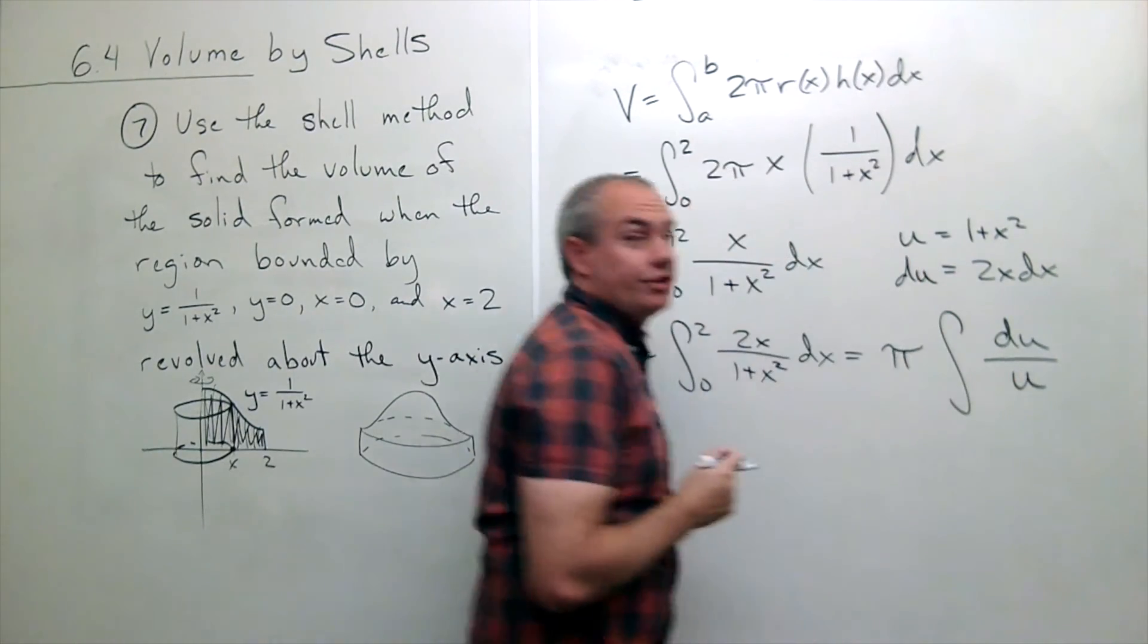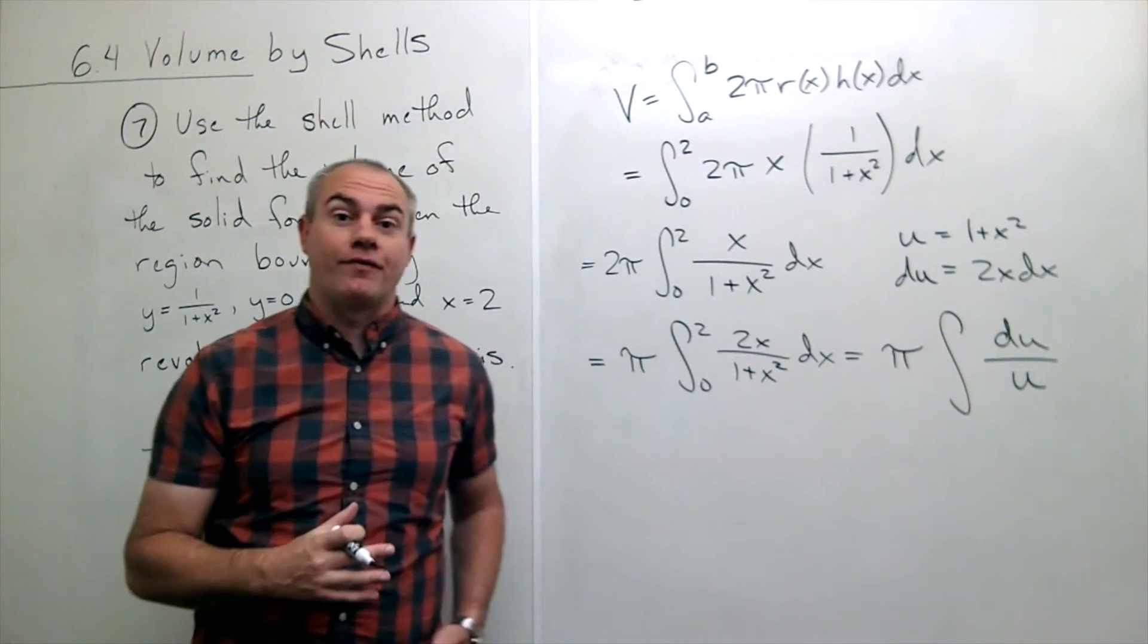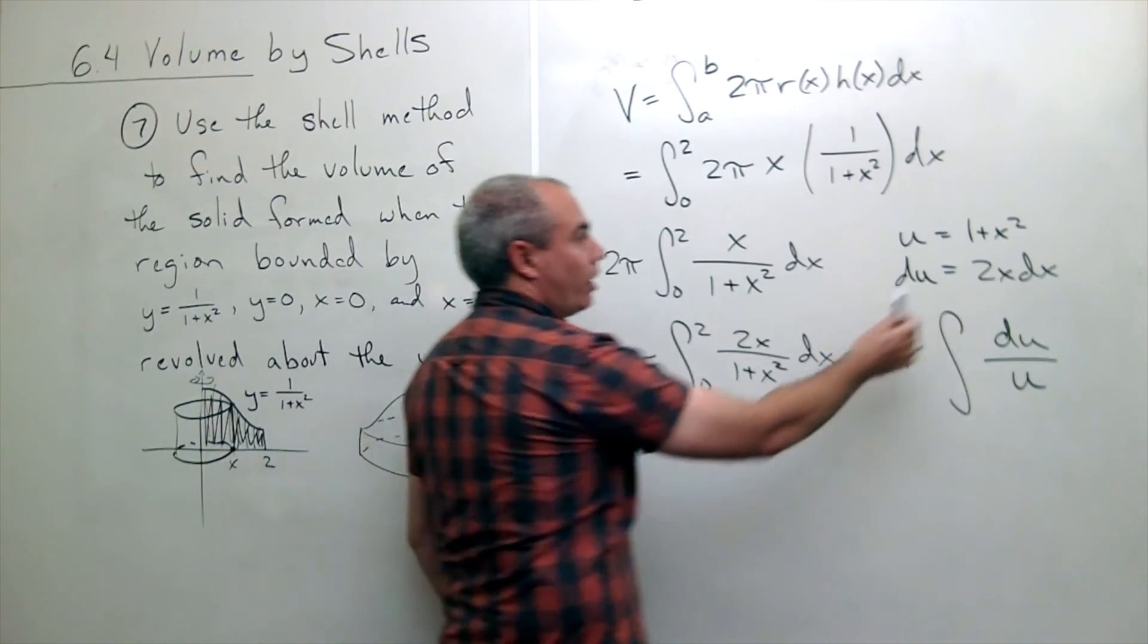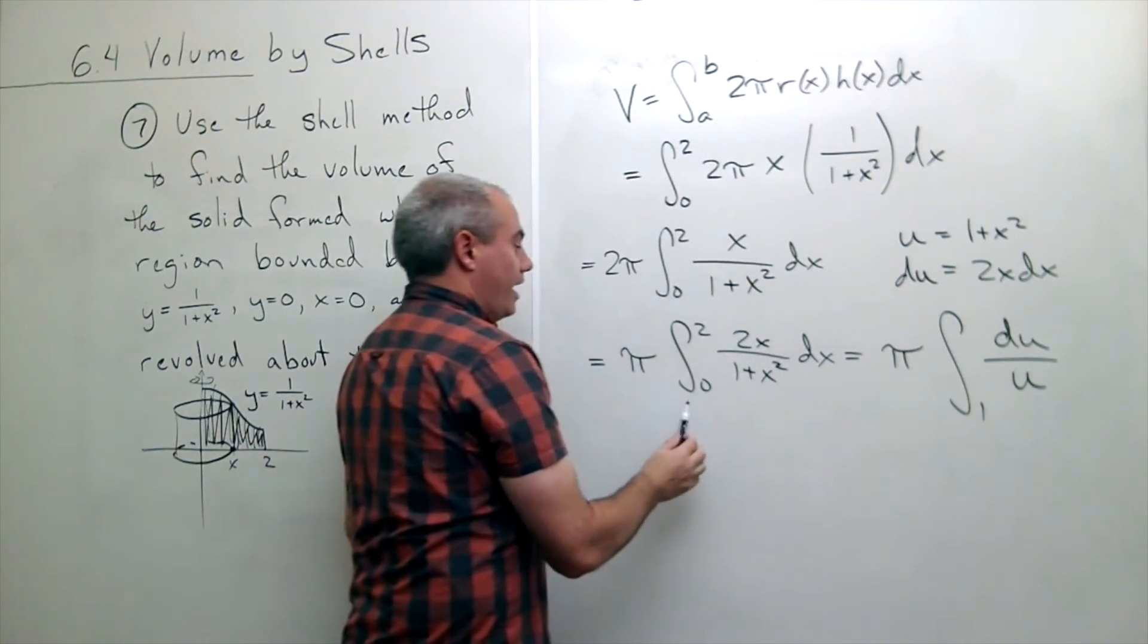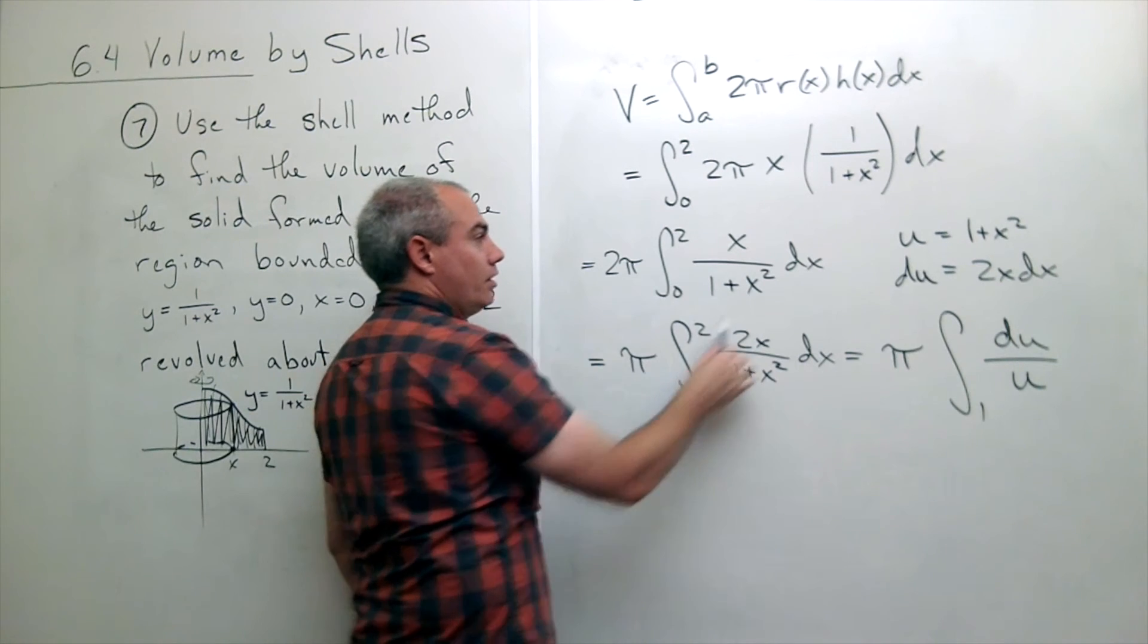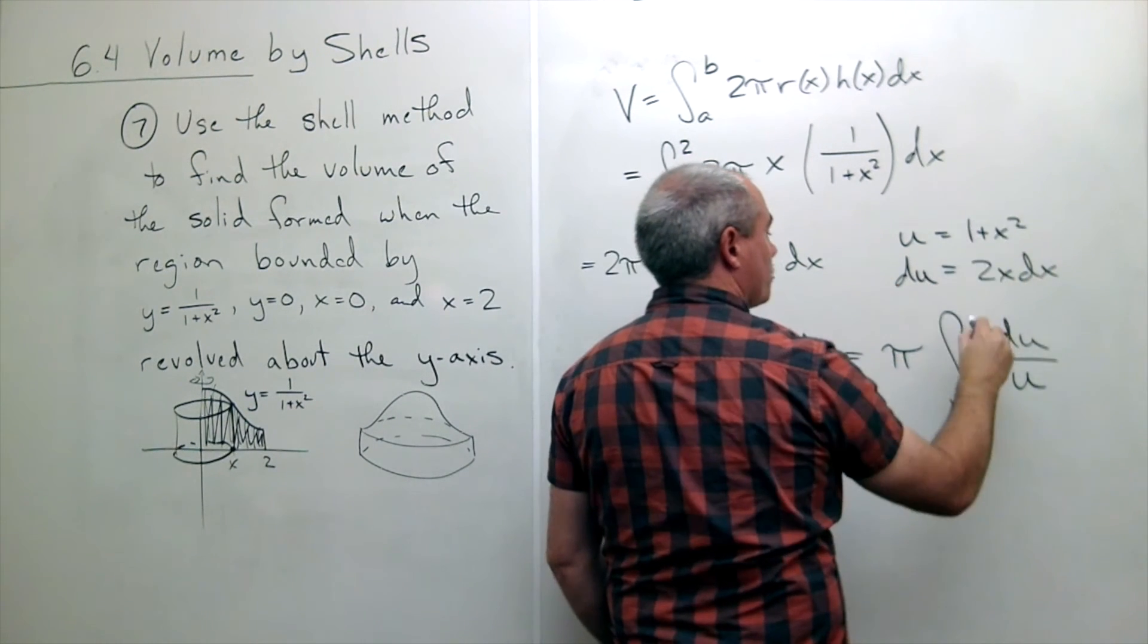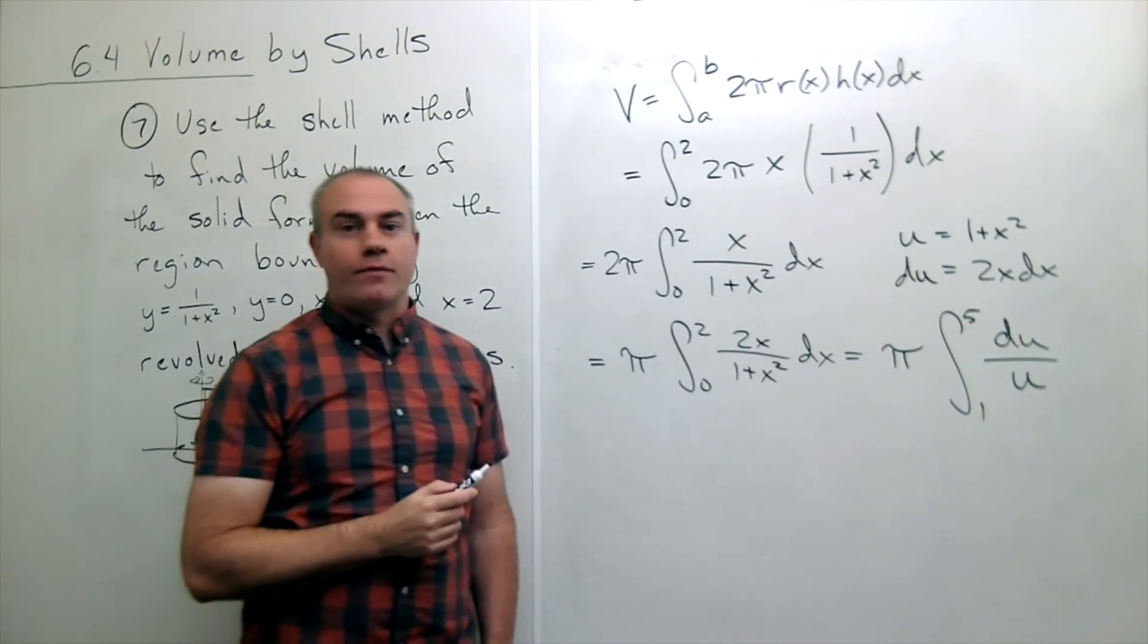And now I can change my limits of integration because I just changed into a different variable u. So let's change our limits of integration. If x is 0 then u would be 1. And if x is 2 then I plug in 2 for x and I get 2 squared is 4 plus 1 would be 5. So now I'm integrating from 1 to 5.